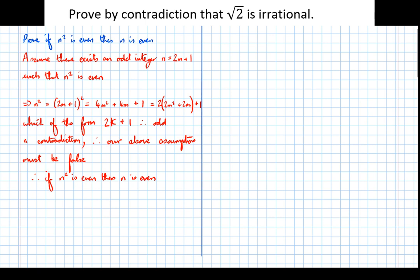So now that we've got that we're ready now to prove root 2 is irrational. So we're again going to do that by contradiction, we're going to assume that the opposite is true.